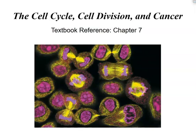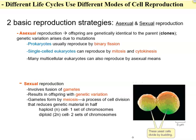Let's talk about cell cycles, cell division, and cancer. There are two basic reproduction strategies: asexual and sexual. Asexual reproduction means offspring are going to be genetically identical to the parent — they are clones. Genetic variation comes from mutations; you can have random mutations or we can induce certain mutations at certain times. Prokaryotes usually reproduce asexually, and that process is called binary fission.